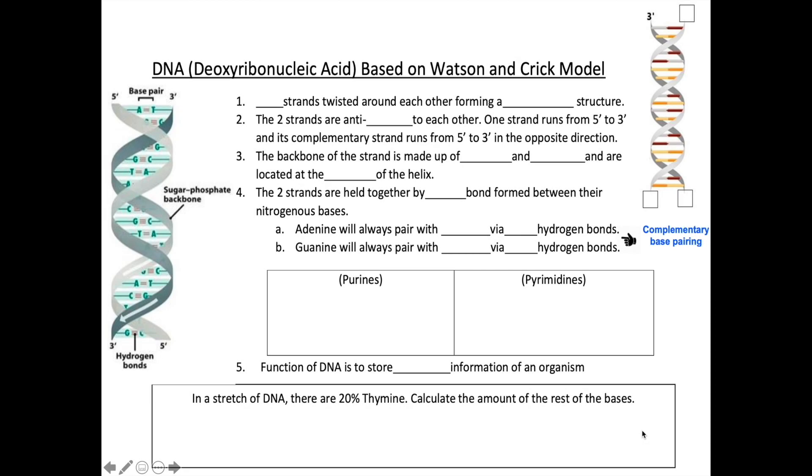These are the findings of Watson and Crick regarding DNA structure. As you can see in this diagram, DNA is made up of two strands which are twisted around each other, forming a double helix structure.